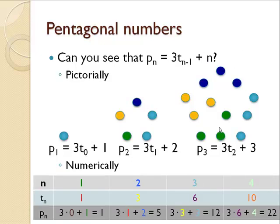Can you see that P sub n is 3 times the previous triangular number plus the index n? Pictorially, if we start with P sub 1 is 1, we get P sub 2 is 3 of the previous triangular numbers plus the 2 for the index in blue. And in P sub 3 we have 3 of the previous triangular number, 3 3s, plus the index of 3. Numerically, we can also see this pattern.